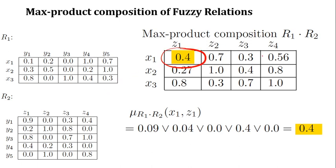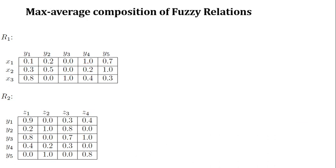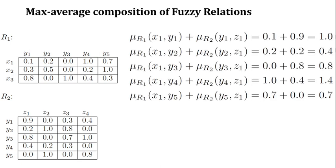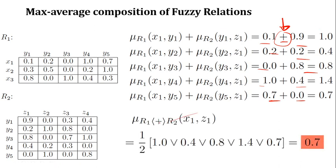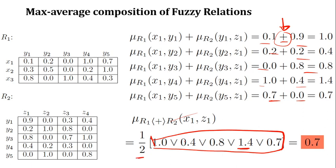If you want to calculate the relation between X2 and Z4, you take the second row and the fourth column. Lastly, we'll see the max-average composition, which is a similar idea, but here we use the plus sign — just like the arithmetic plus operator. You add all those items together, then find which one is the maximum among those values. Once you get the maximum, which is 1.4, you take the average of 1.4, which gives 0.7.